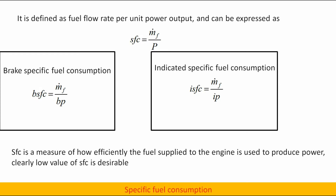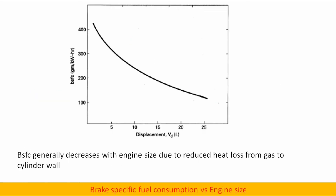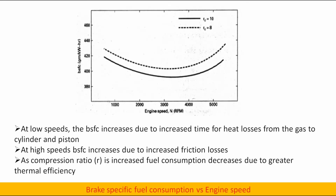Brake specific fuel consumption generally decreases with engine size due to reduced heat loss from the gas to the cylinder wall. At low speeds, BSFC increases due to increased time for heat losses from gas to the cylinder and piston. At high speeds, BSFC increases due to increased friction losses. As compression ratio R is increased, fuel consumption decreases due to greater thermal efficiency.